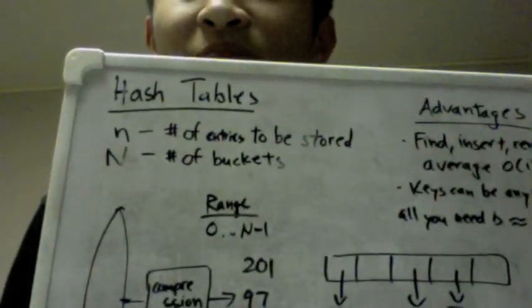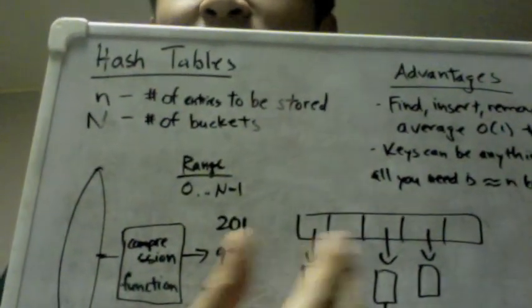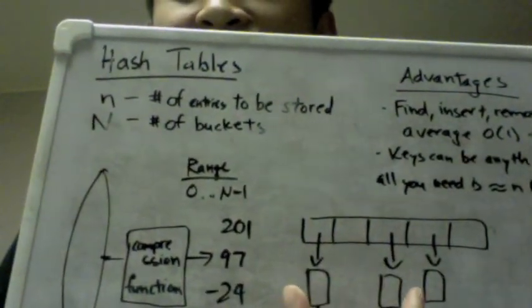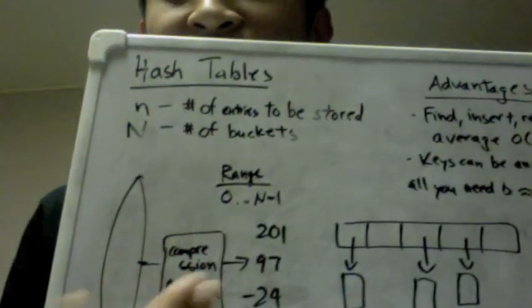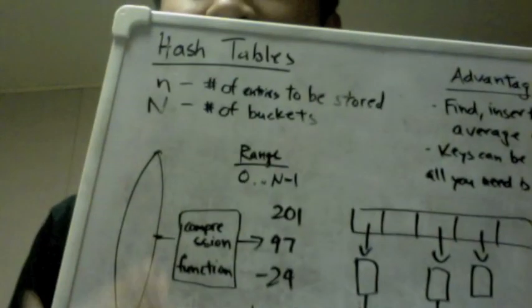And this compression function works best if it is completely random. So hash codes are hard to write, but the ideal one is where all the objects get mapped to a random number and that can be stored later.